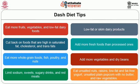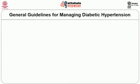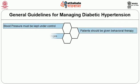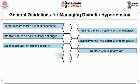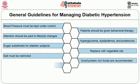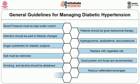General guidelines for managing diabetic hypertension: blood pressure must always be kept under control. Patients with hypertension should be given lifestyle or behavioral therapy. Attention should be paid to lifestyle changes so that weight reduction and regular exercise become part of everyday management. Hyperglycemia, dyslipidemia, and proteinuria should be controlled for all patients. For beverages, instead of sugars, non-nutritive sweeteners like NutraSweet and aspartame are suitable sugar substitutes.